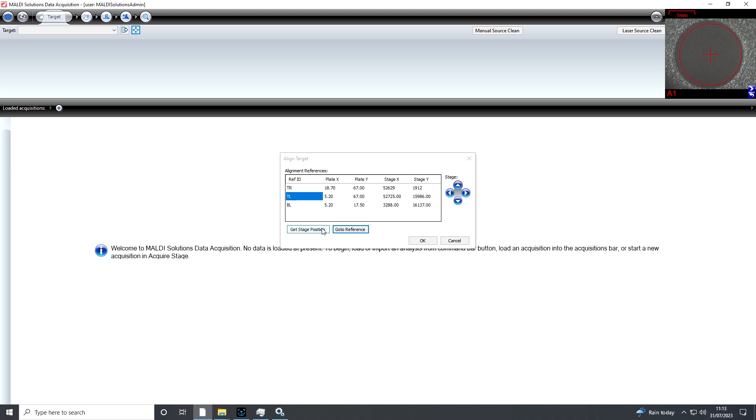Once aligned, click Get Stage Position. Once all three alignment reference wells are aligned, click OK.